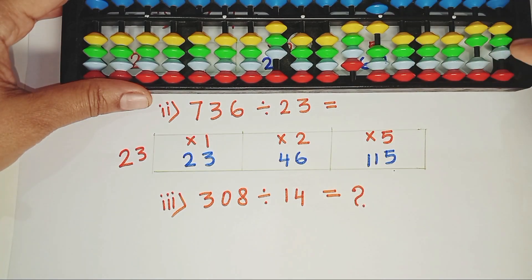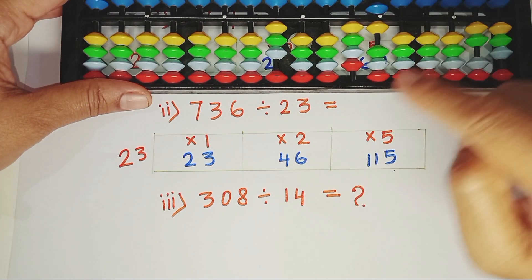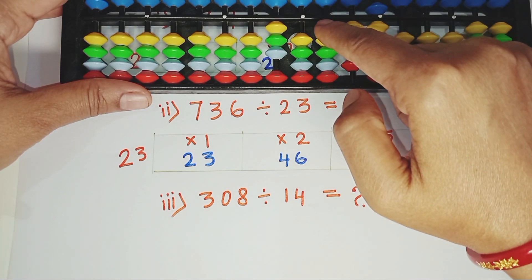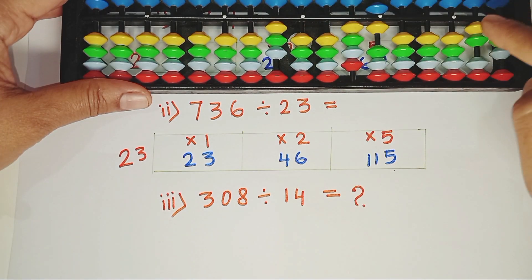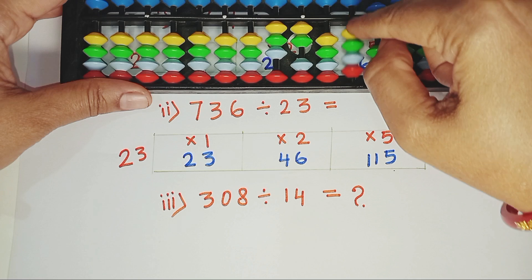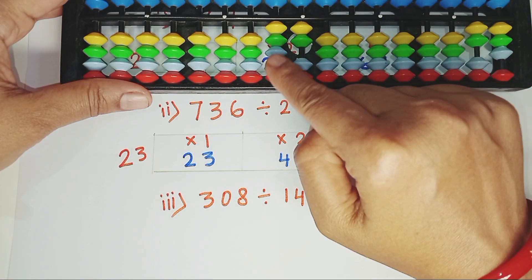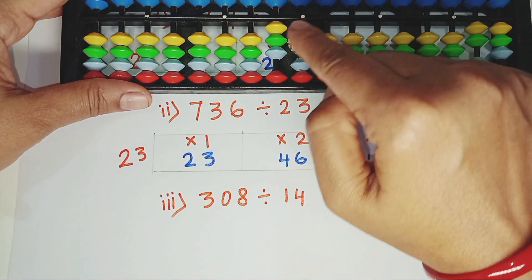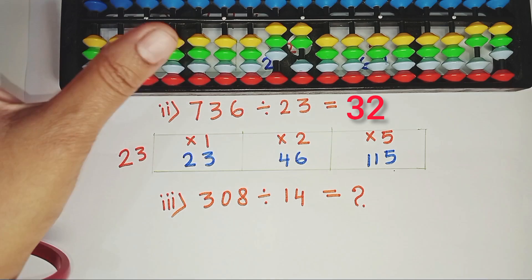46 is divisible by 23. 23 times 2, 46. We will jump one rod and place the answer here. 23 times 2, 46. The answer is 3 and 2, 32. See how easy that was.